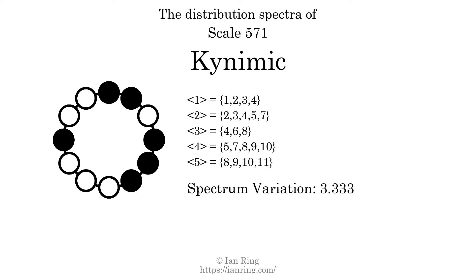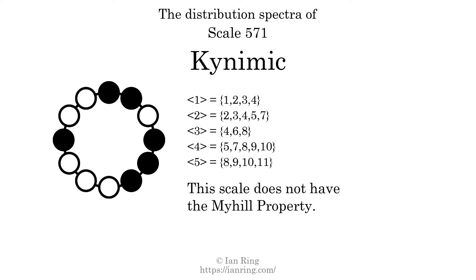The spectrum variation is the sum of all the widths, divided by the number of tones. The spectrum variation of this scale is 3.333. Since the variation is greater than zero, this indicates that the scale is not perfectly even. The highest spectrum width is five. Since this is greater than one, we know that this scale is not maximally even. If every spectrum has exactly two specific intervals, we call that the Myhill property. This scale does not have the Myhill property. Since the generic interval ranges overlap, this scale is an improper scale.